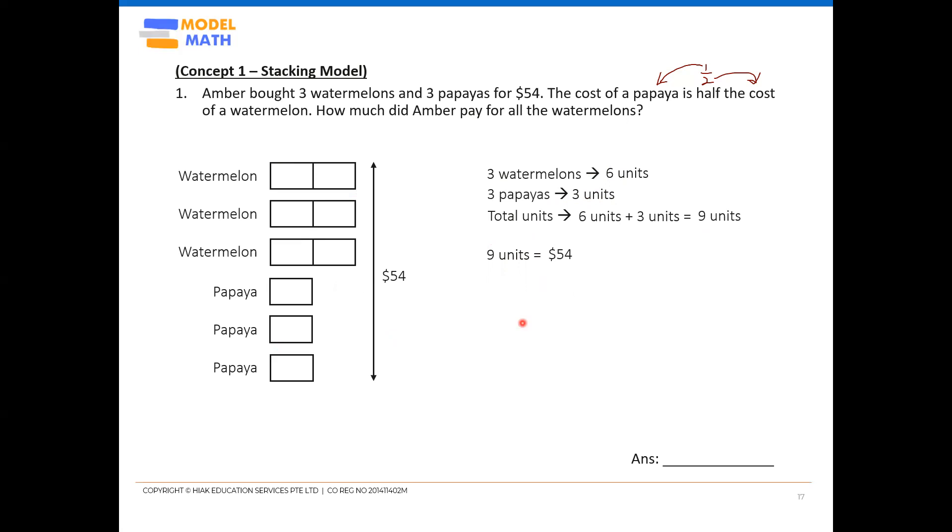Of course, always work out the value of one unit. Just do the division, 54 divided by nine. That would be $6 per unit.